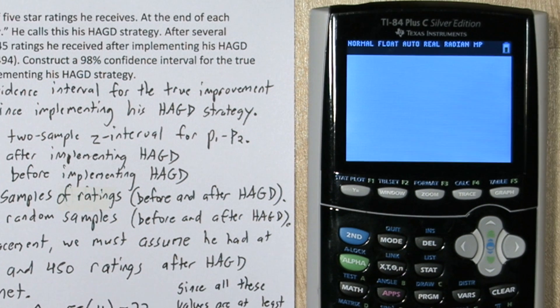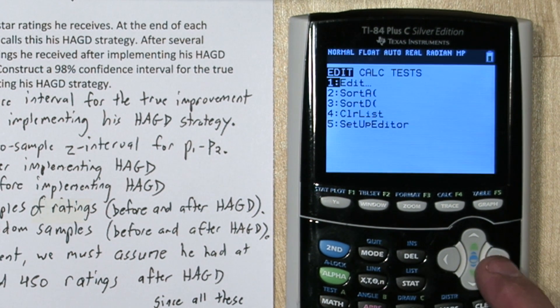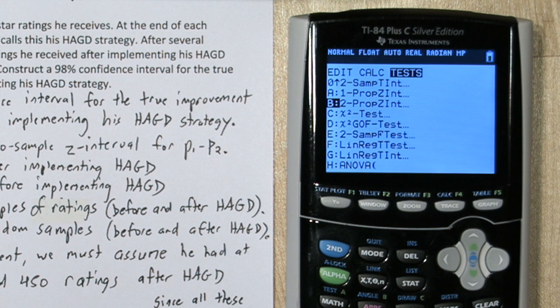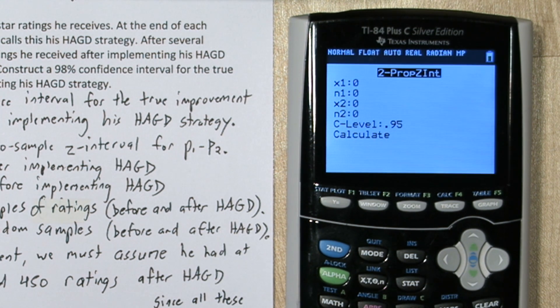Now we're going to do the do step on the calculator. If you press stat and you go over to test, option B on this calculator is 2 prop Z interval. Now for x1, we're going to put the 31 five star ratings he got in his sample that was post his have a great day strategy. And that sample size was 45.